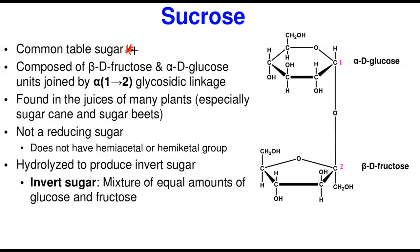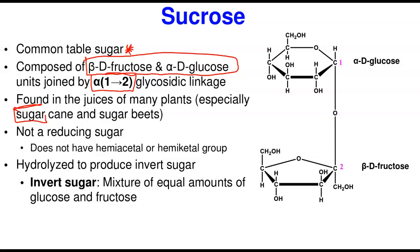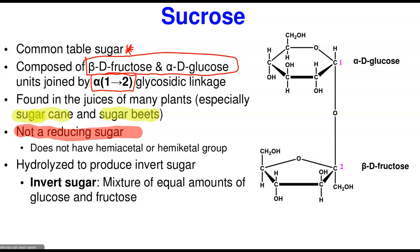Now sucrose is the common table sugar we use at home for baking, sweetening, and many other things. It is composed of beta-D-fructose and alpha-D-glucose — the two sweetest sugars — joined together by an alpha-1,2 glycosidic linkage. It is found in the juices of many plants, especially sweet ones, and is particularly found in sugar cane and sugar beet, which remain the greatest sources and are used for its industrial production.